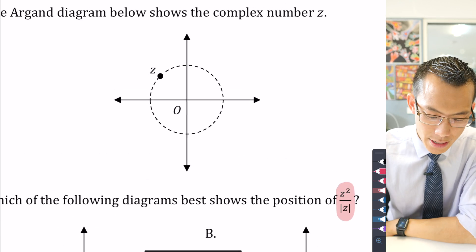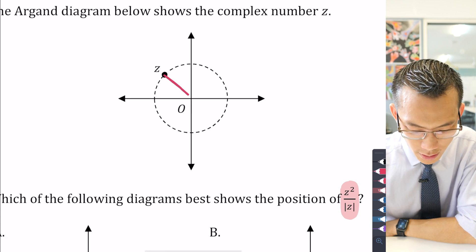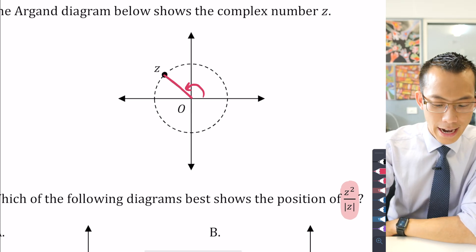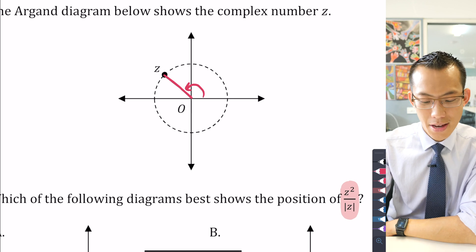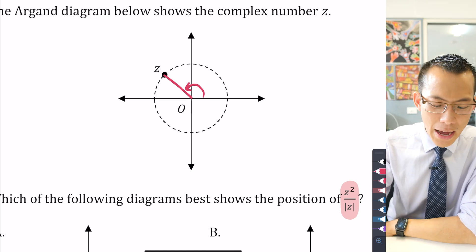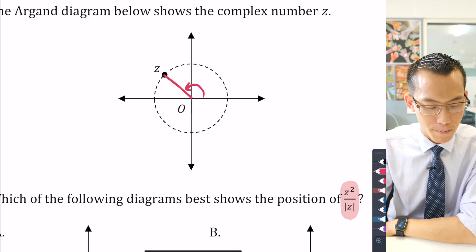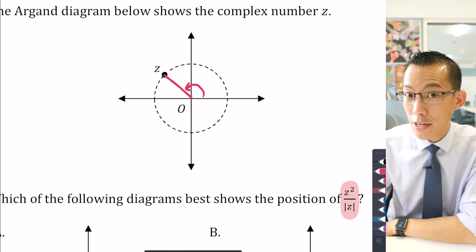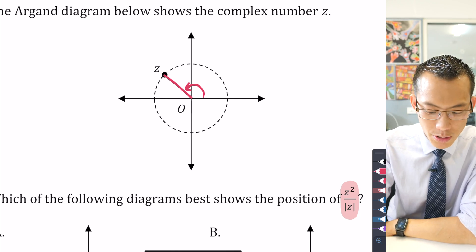What you do know though is this argument, because if you think about how far you need to rotate around from the positive real axis to get to z, that pretty clearly looks like three quarters of the way to a straight angle. So that's 3π/4.